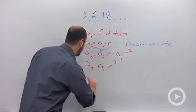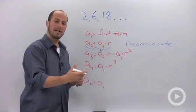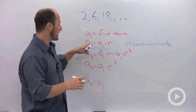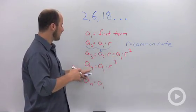If you notice, there's always one less rate than the term number. Our second term has one R, third term has two Rs, fourth term has three Rs.